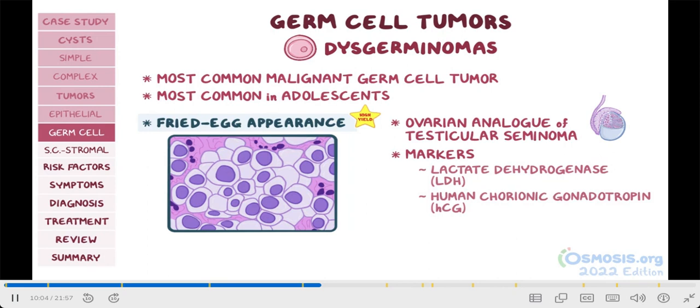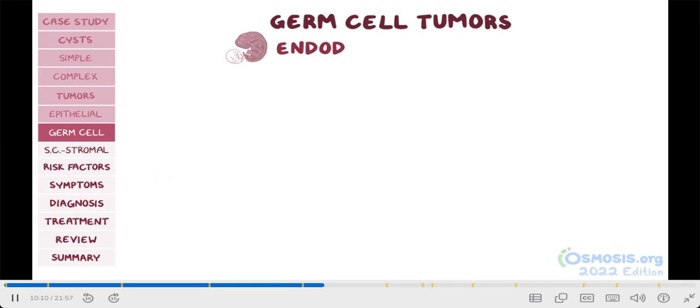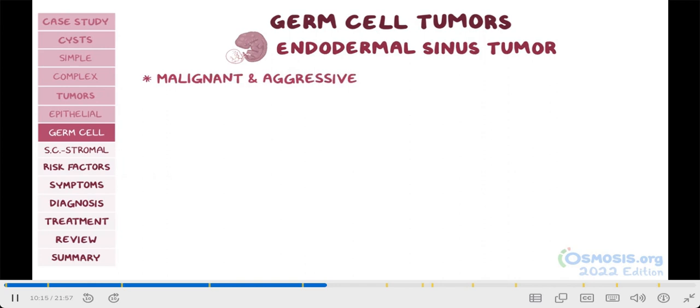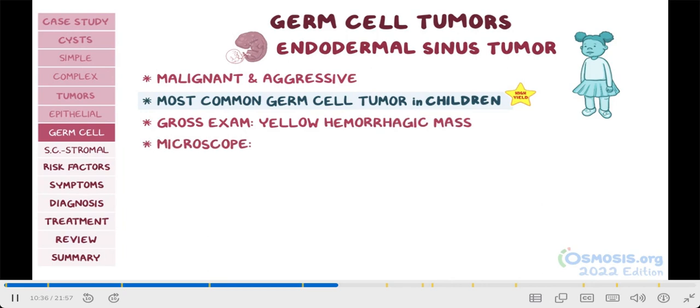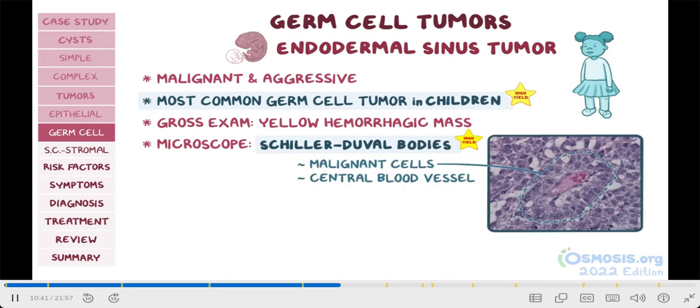The third type of germ cell tumor comes from the yolk sac, and it's called endodermal sinus tumor. Endodermal sinus tumors are malignant and aggressive. What's high yield here is that these are the most common germ cell tumors in children. So if a test question is about a child, especially if they are younger than 3 years old with an ovarian mass, think of yolk sac tumor at the top of your differentials. Another key thing to keep in mind is that on gross examination, they typically form a yellow hemorrhagic mass, while under the microscope we can see glomeruloid structures, or Schiller-Duval bodies — these are rings of malignant cells around the central blood vessel. Lab tests classically show elevated alpha-fetoprotein, or AFP, levels.